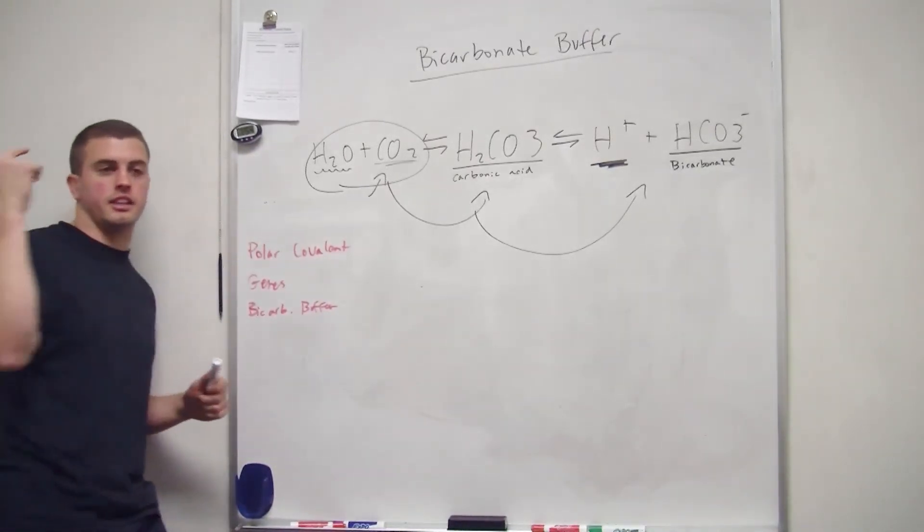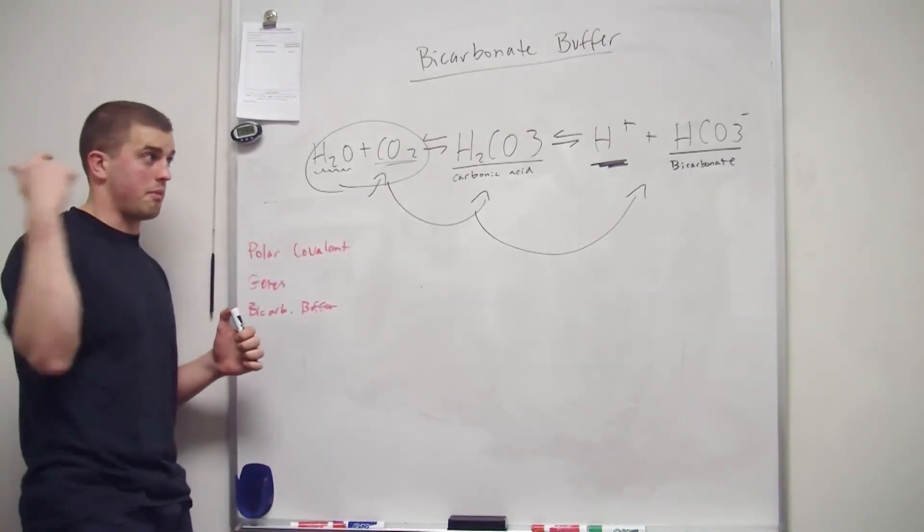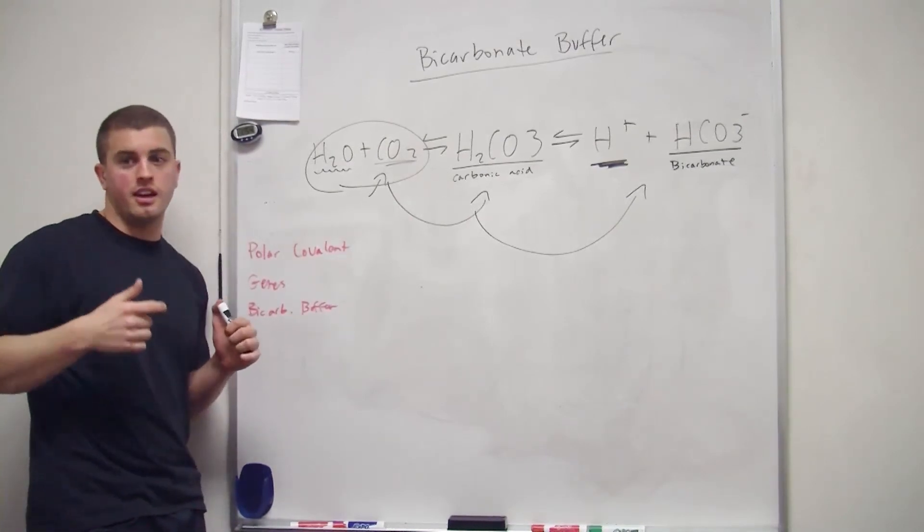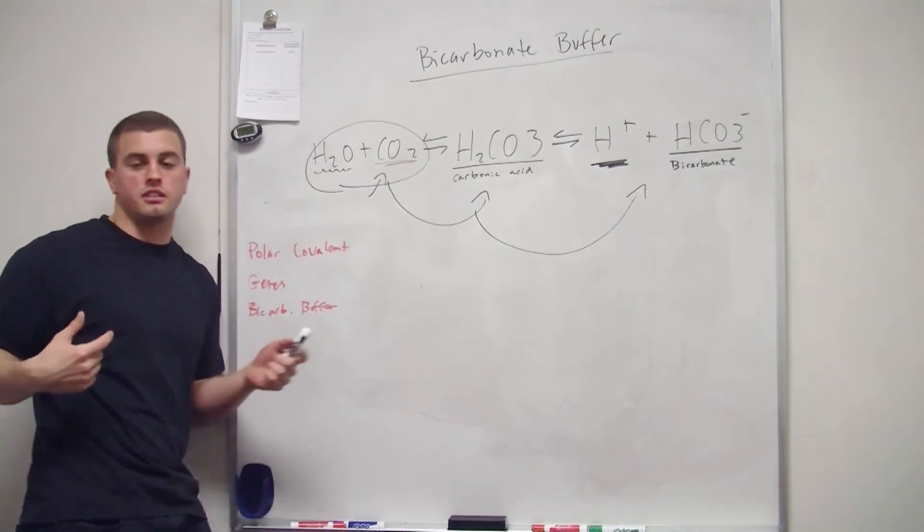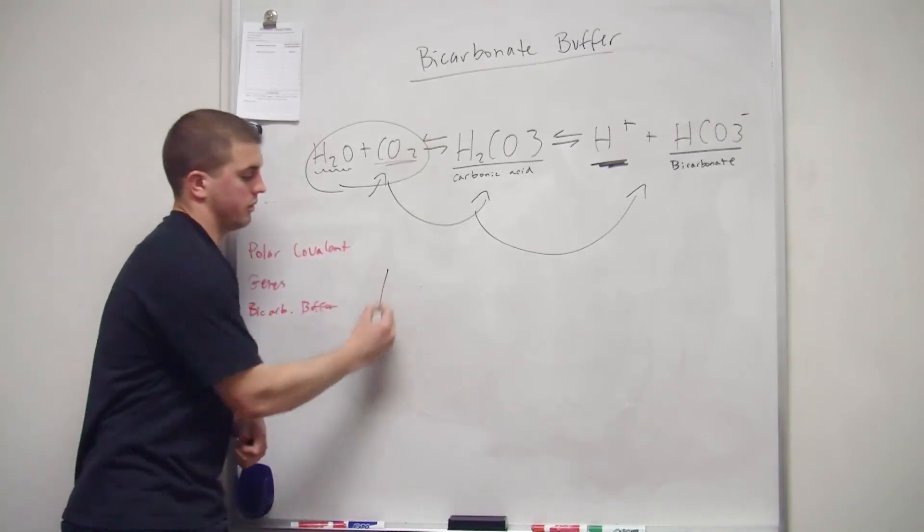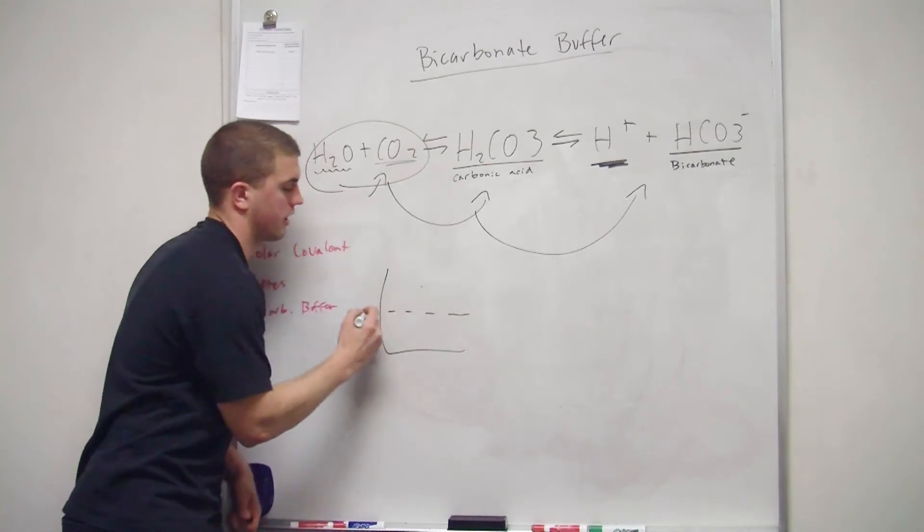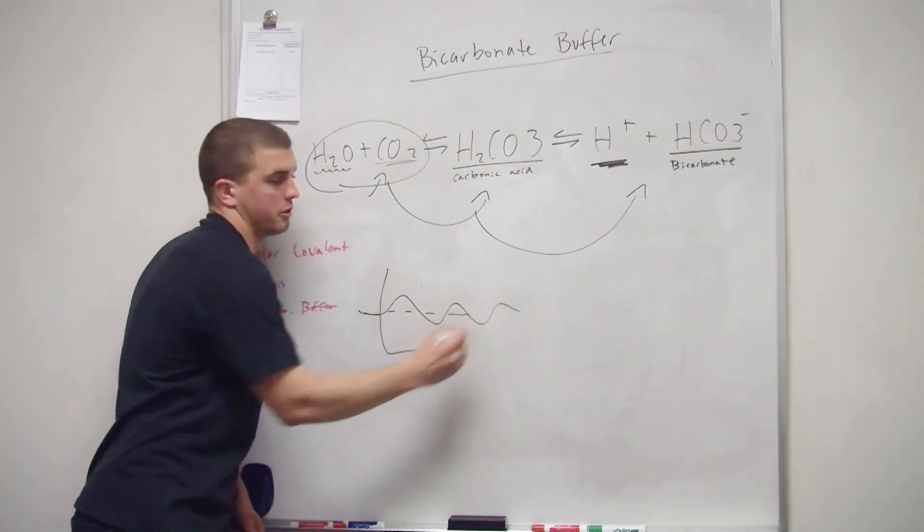So it just constantly goes back and forth, back and forth, back and forth in your body. It's never just like, oh, we're going to hang out as H2O and CO2. It's just going to constantly keep moving back and forth. So when you have your chart, it's going to do that with your pH levels.